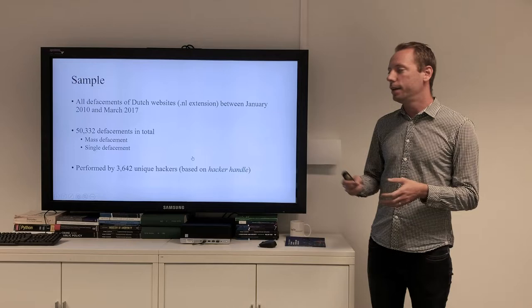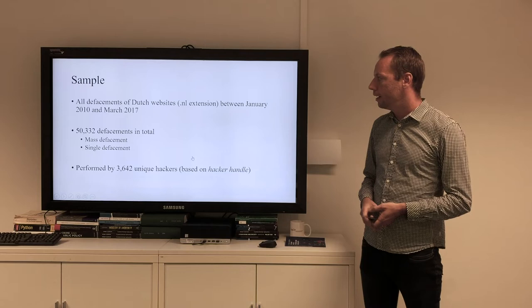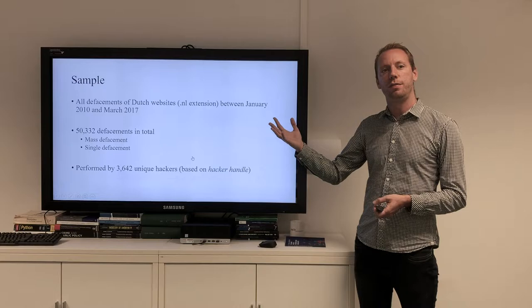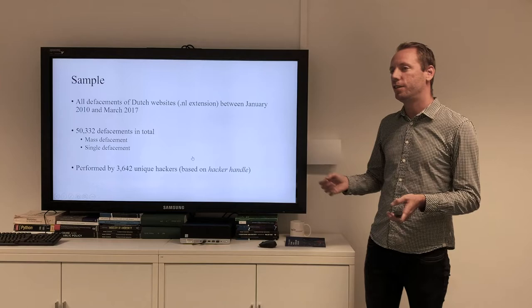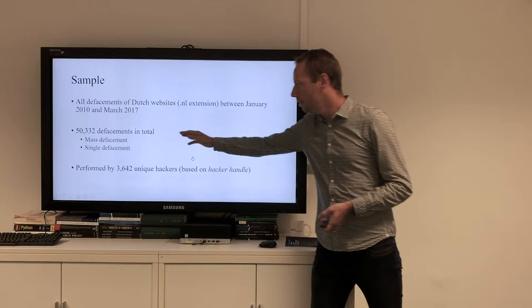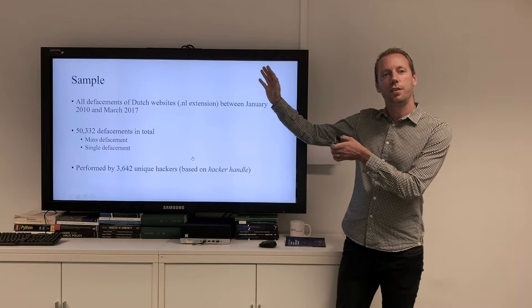We'll focus in this study only on Dutch websites, so websites with a .nl extension. We only have data between January 2010 and March 2017, about seven years. In total, we distinguish more than 50,000 defacements. The number of websites that is defaced is even larger. That's because there are some mass defacements. During a mass defacement, multiple websites are defaced during the same attack. But because we're interested in the number of attacks and not the number of websites, we count those as one attack.